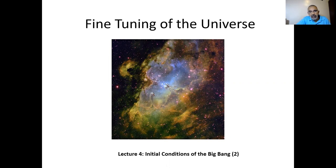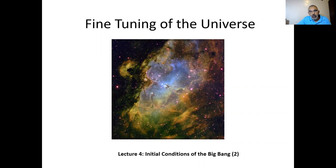In our last lecture, we explored the unbelievably fine balance that had to be there between expansion speed and density of matter and energy, so that stars and galaxies could form and anything resembling life as we know it would be possible. We saw numbers like one part in 10 to the 60 — if things were changed by one part in one followed by 60 zeros, life as we know it would not be possible.